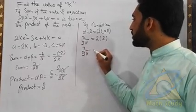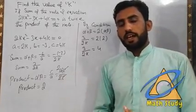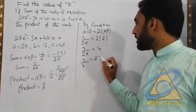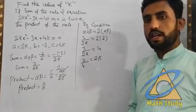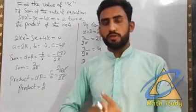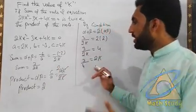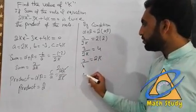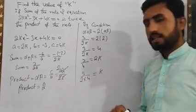We have 3/2k = 4. By cross-multiplication and dividing, we can solve for k. This gives us the k value of 3/8.